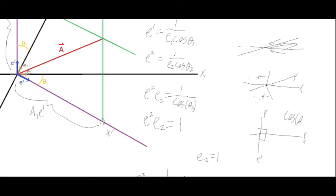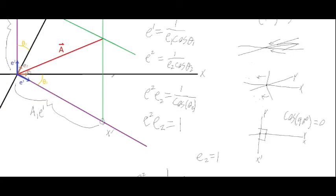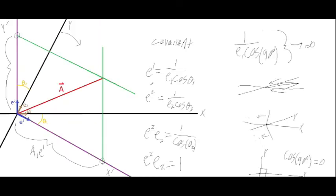As the angle between the original axes approaches 90 degrees, cosine of 90 degrees equals zero. Going back to our formula, if cosine approaches zero, then 1 over cosine of theta approaches infinity. So the dual basis e¹ keeps getting larger and larger as you squish the original axes together. That is why they're called contravariant and covariant — they are inverses of each other: as one gets smaller, the other gets larger.